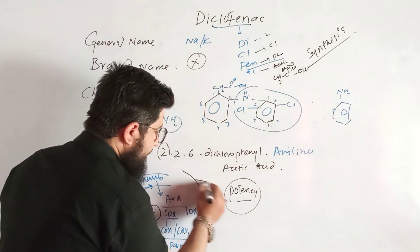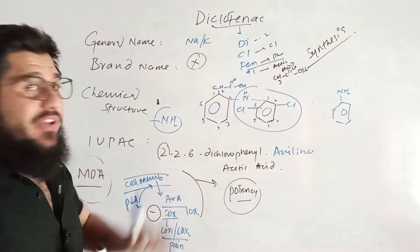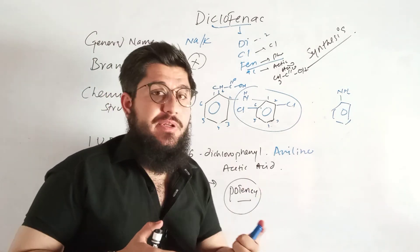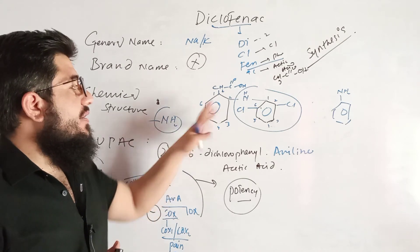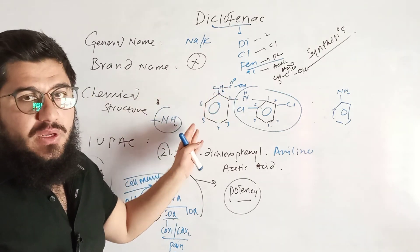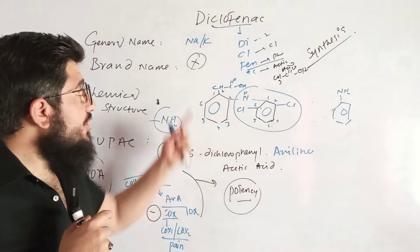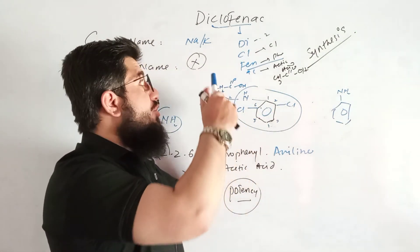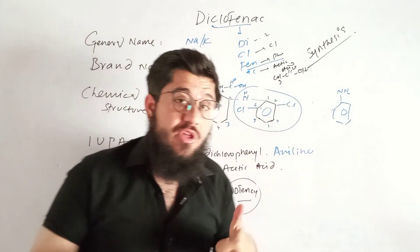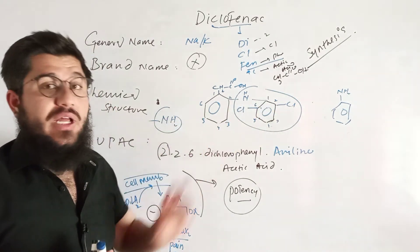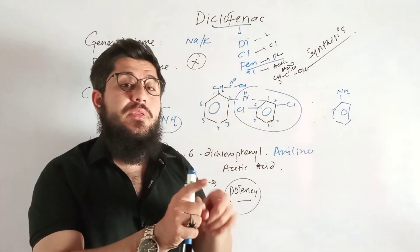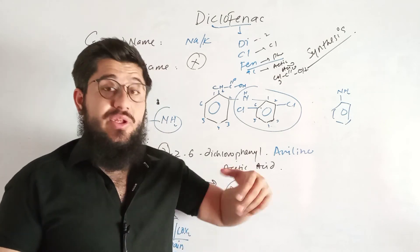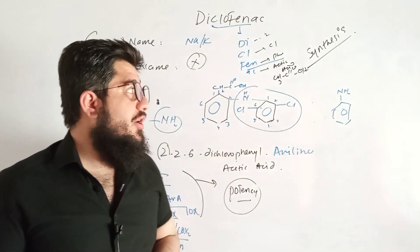Regarding potency, diclofenac is more potent than most NSAIDs, including aspirin. Aspirin has only one simple ring with an acetic acid-type group, whereas diclofenac has two rings and a larger structure. The two chloride substituents are believed to be responsible for the increased potency of diclofenac. That said, there are some other NSAIDs that are even more potent than diclofenac.